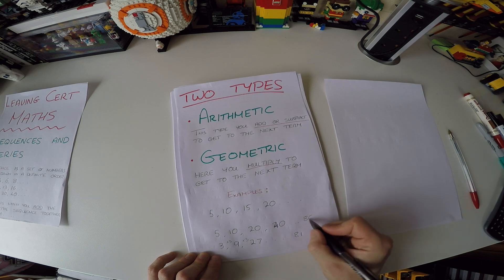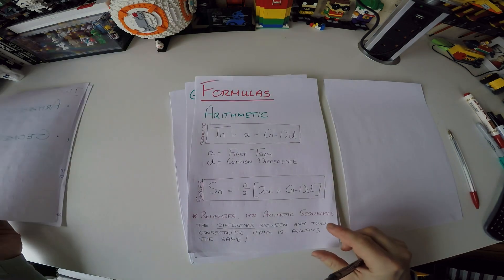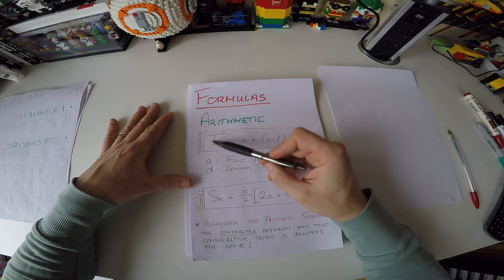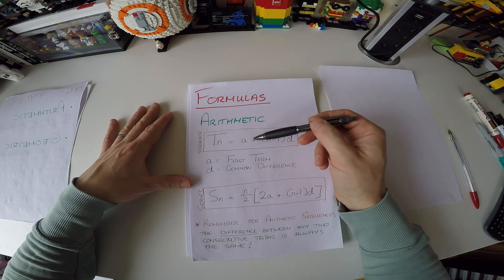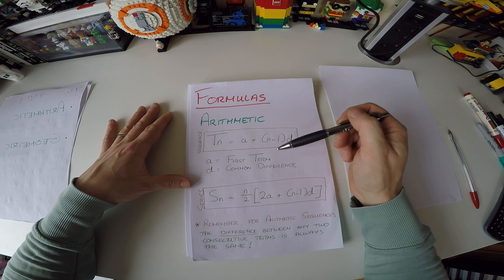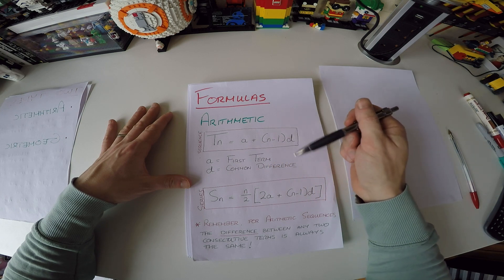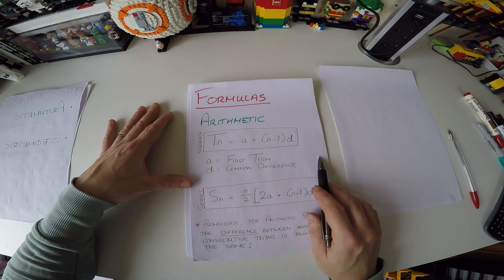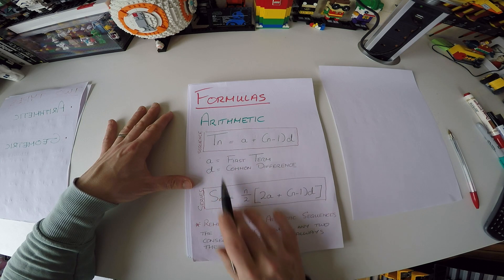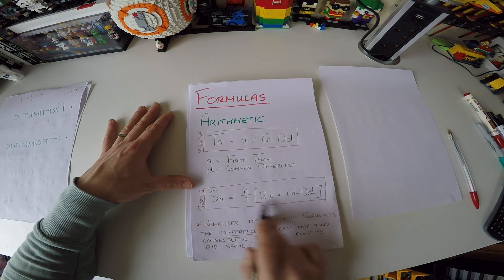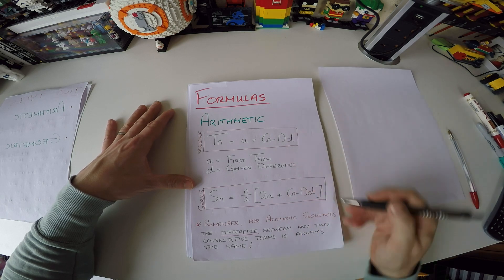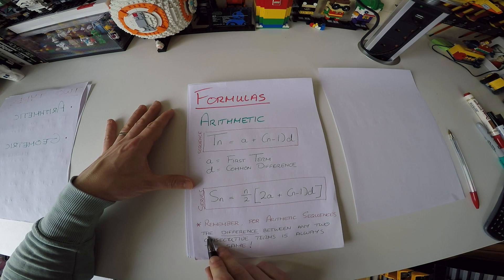There are two main types with formulas given in your logbook, so you have these in the exam. The arithmetic formulas: for any term, Tn equals a plus (n minus 1)d, where a is the first term and d is the common difference — which can be plus or minus as long as it's constant. For the series, Sn equals n over 2 times (2a plus (n minus 1)d).